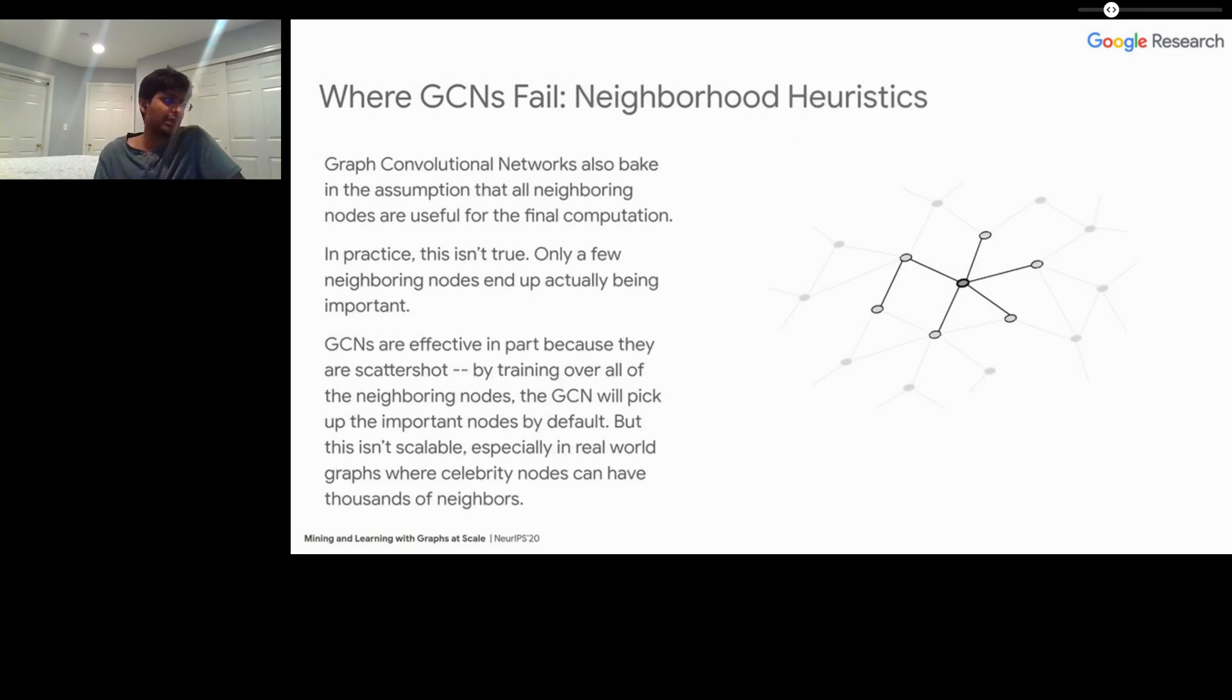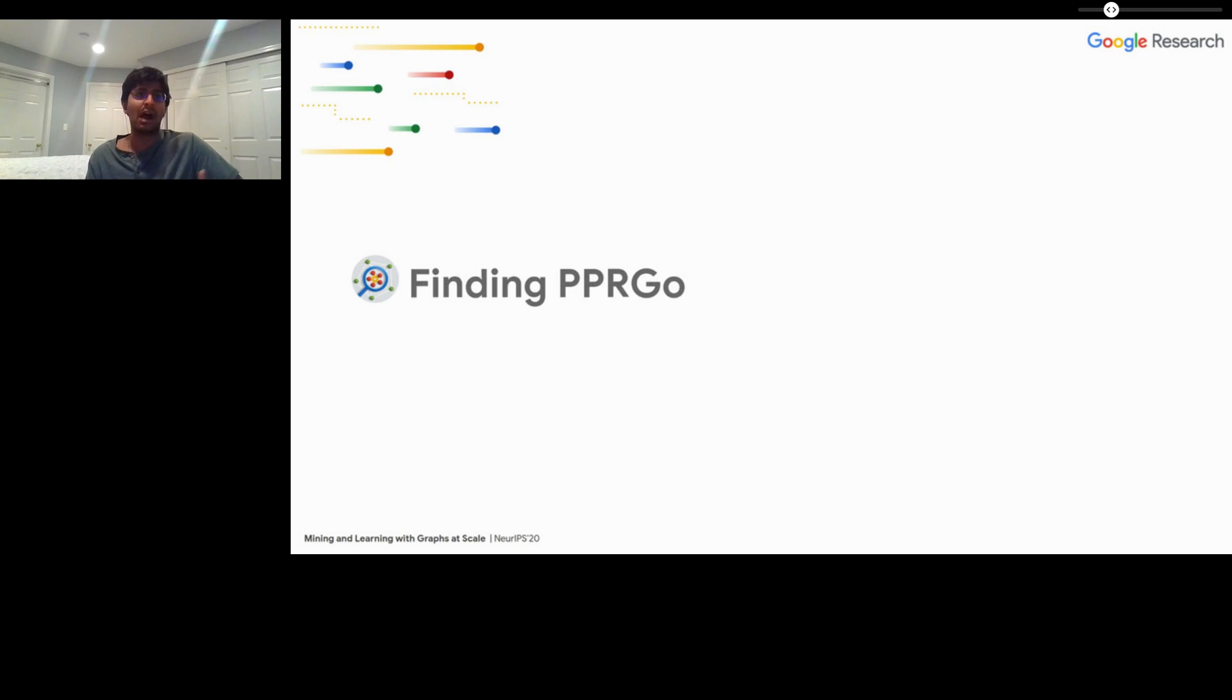The second big problem is graph convolutional networks bake in this assumption that all neighboring nodes are useful for the final computation. In practice, empirically, that's just not true. GCNs end up being effective in part because they are kind of scattershot. They train over all of the neighboring nodes, and the GCN ends up picking up the most important nodes by default and devaluing all the other ones. But this also has some problems with scalability. In the real world, you might have celebrity nodes that have thousands of neighbors. Either you're doing a lot of calculation that just doesn't matter because the model is going to devalue those nodes anyway, or you have to do some kind of random sampling scheme where you might end up missing the nodes that actually provide the important context that the model needs to learn something about the seed nodes. That also isn't great from a scalability perspective. So PPR Go was our answer to these two problems.